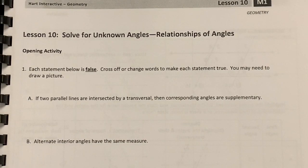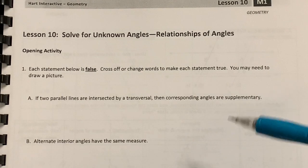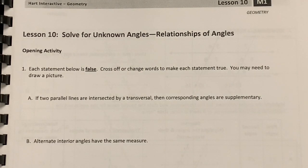On page 7, unit 10, solving for unknown angles. This question says each statement below is false. Cross off or change words to make each statement true. You may need to draw a picture.